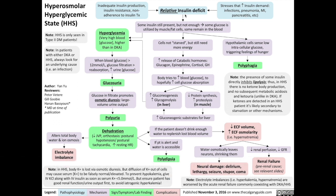This relative insulin defect means that some insulin is still present in the body, but is not enough for the body to do what it needs to do. So some glucose is utilized by the fat and muscle cells, but some remains in the blood. This leads to hyperglycemia, and this hyperglycemia is actually a much higher glucose concentration than seen even in diabetic ketoacidosis.